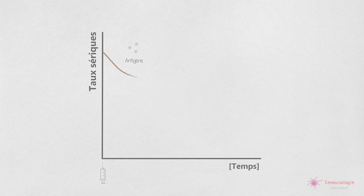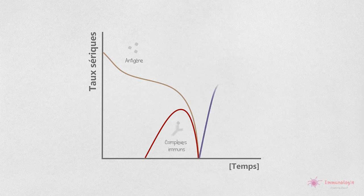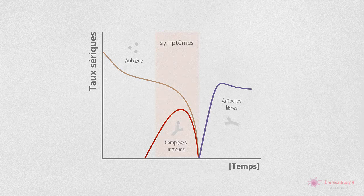Les lésions inflammatoires disparaissent lorsque les complexes et l'antigène restant sont éliminés et les anticorps libres apparaissent en circulation. Les symptômes cliniques sont généralement de courte durée et les lésions guérissent à moins que l'antigène ne soit réinjecté.